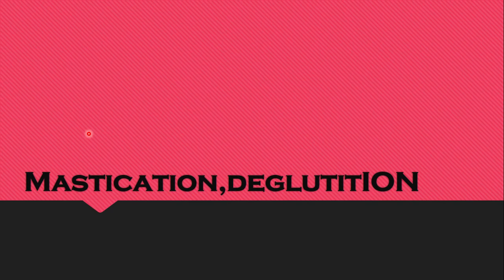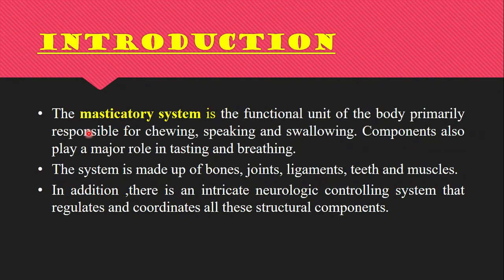Today we will talk about mastication and deglutition. The masticatory system is a functional unit in the body primarily responsible for chewing, speaking, and swallowing. It has a skeletal component — including the TMJ, maxilla, and mandible — and a neuromuscular component including muscles of mastication and the submissive system. All these components work interactively. The three major functions are mastication, swallowing, and speech — all highly coordinated complex neuromuscular events.